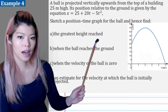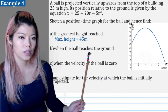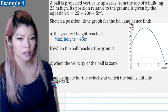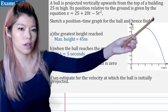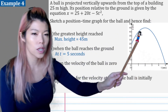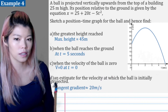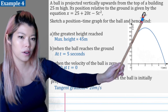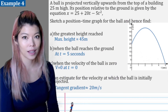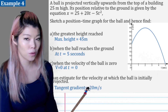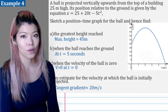From the graph: the greatest height reached is 45 meters. The ball reaches the ground at five seconds. The velocity of the ball equals zero when the gradient is zero — at the turning point, which is at two seconds and 45 meters. For an estimate of the velocity when the ball is initially projected, you draw a tangent at t equals zero and find the gradient of that line, which is roughly 20 meters per second. Your answer might be 19 or 21 — that's fine since it's an estimate. Thank you for watching, see you next time!